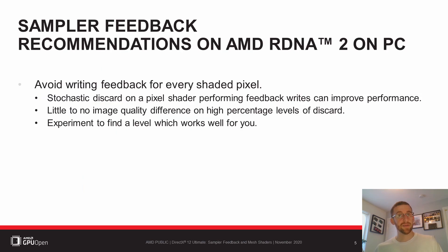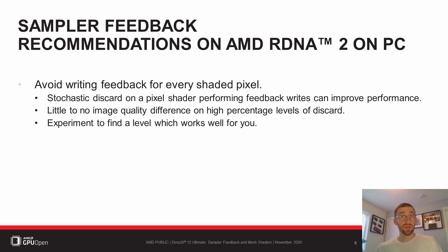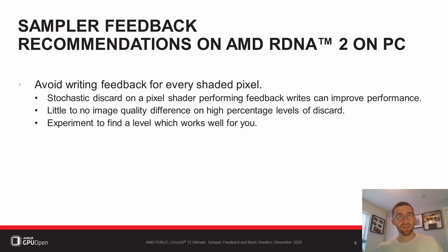For RDNA 2 on PC, our performance recommendation is to avoid writing feedback for every shaded pixel. You don't usually need that granularity of information, and it can bottleneck the GPU on writes to the feedback resource. Instead, you can write your feedback pass to skip pixels randomly by discarding them in the Pixel Shader. We've seen high rates of stochastic discard resulting in higher performance with little to no image quality changes. You can experiment and find a level which works well for your needs.